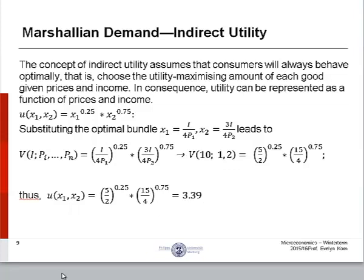Do not be confused by terminology. The difference between direct and indirect utility is only in the way that it is represented. That is to say in terms of goods x1 and 2, or in terms of prices and income for goods 1 and 2. Hence, the numerical outcome of 3.39 is the same for both direct and indirect utility.